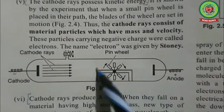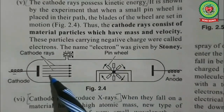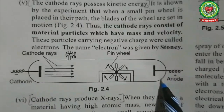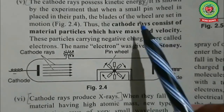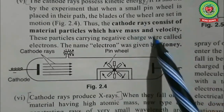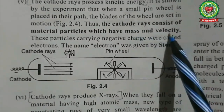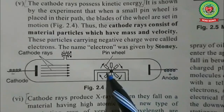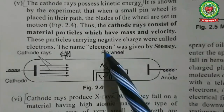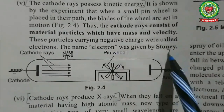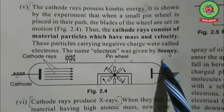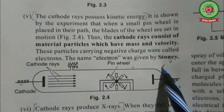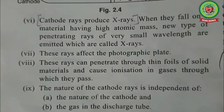The kinetic energy was demonstrated with a pinwheel placed between cathode and anode. The pinwheel actually moved when cathode rays passed towards the anode, which only happens when something has mass and velocity. The name 'electron' was given by Stoney, but the discovery was made by J.J. Thomson.